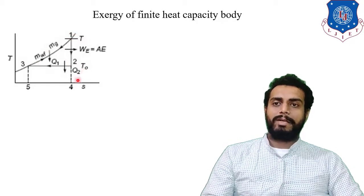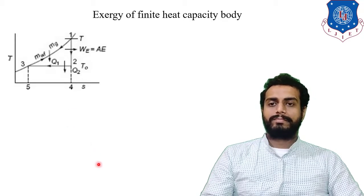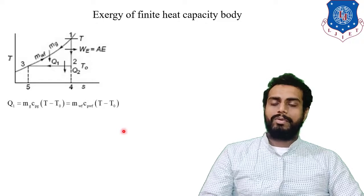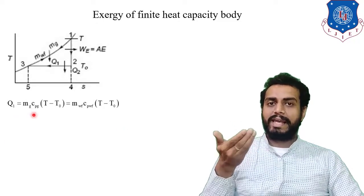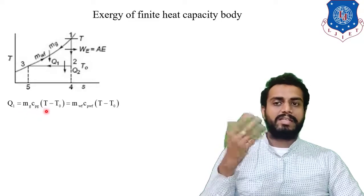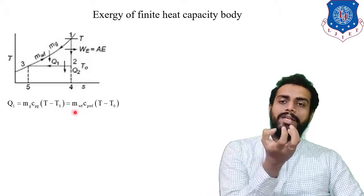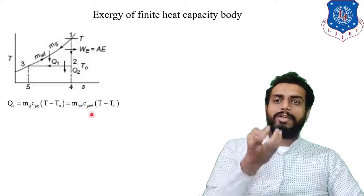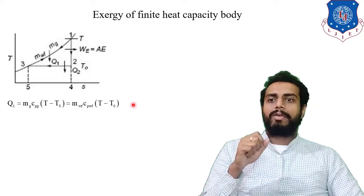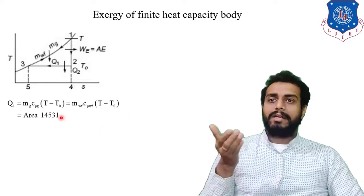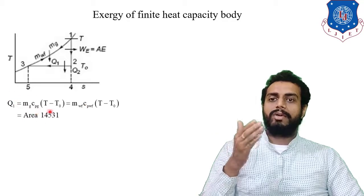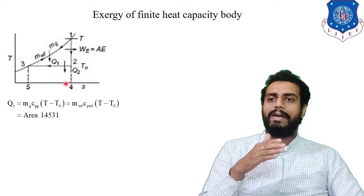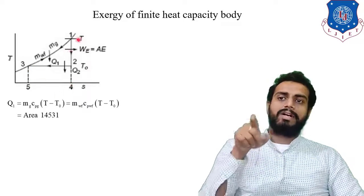Okay, so now let us understand the fundamentals. Very simple. So the very first equation will be what students? Q1 is equal to whatever amount of heat is rejected by the gas that is Mg CpG T minus T0 because the gas is rejecting this much heat. Same amount of heat is gained by the working fluid. So the working fluid will accept how much energy or heat MwF CpWF into T minus T0. Further what we can write this can be written from the heat balance. So Mg CpG T minus T0 is equal to MwF CpWF T minus T0 that is highlighted by the area 1, 4, 5, 3, 1. So that much area will give us the heat transfer Q1.